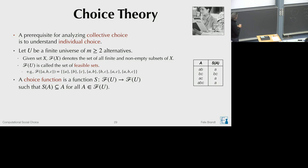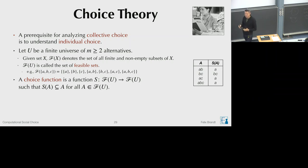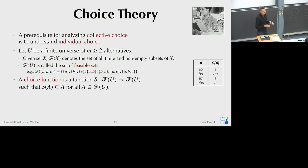In this example, the decision maker is choosing A from {A,B}, choosing {B,C} from {B,C} — so both alternatives — choosing A from {A,C}, and choosing A from the set of all three alternatives. A general note: here we assume every set is feasible, but in many applications of choice theory the set of feasible sets is constrained. In our case, a choice function is just a function from F(U) to F(U).